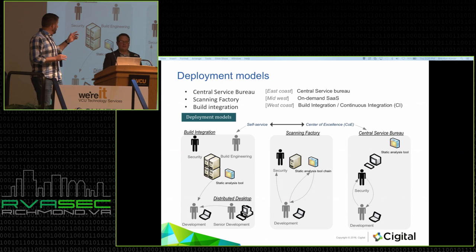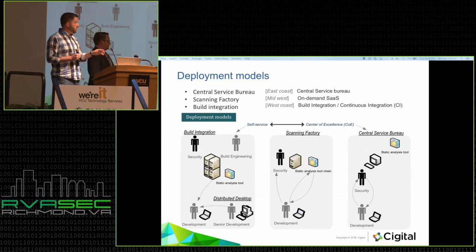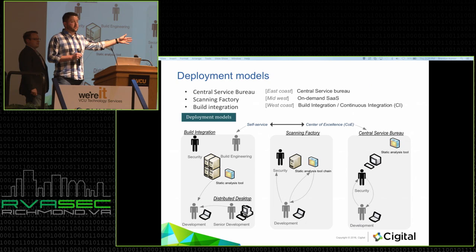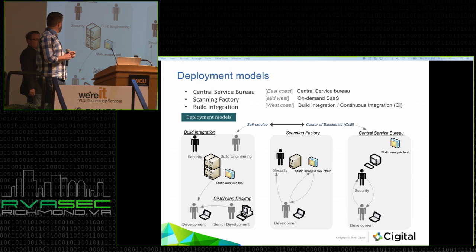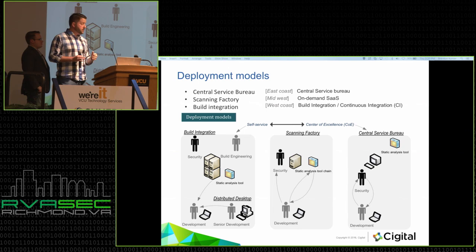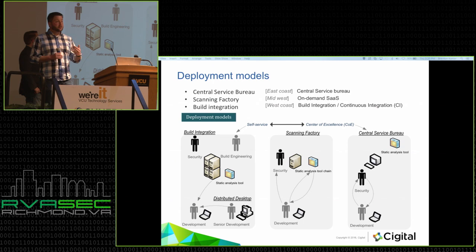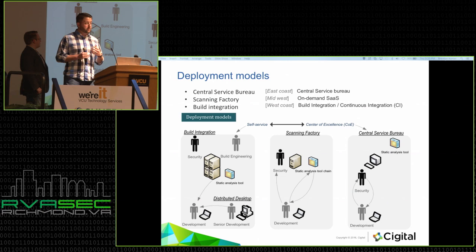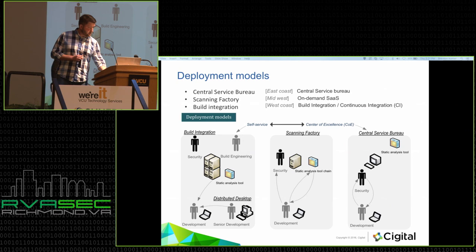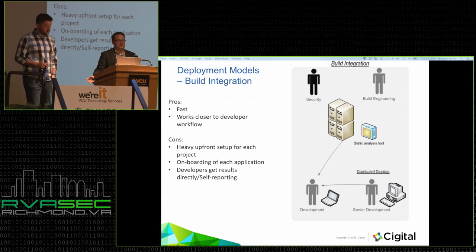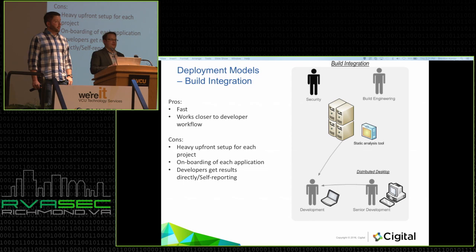Let's talk about deployment models. The overall model moves from a decentralized model towards a more centralized one — who is actually doing the code review and running the tools. Interestingly, we've observed regional trends: on the East Coast, organizations tend to have a central service bureau; in the Midwest, they prefer security as a service or a third-party on-demand model; and on the West Coast, you see more automation, build integration, and continuous integration.